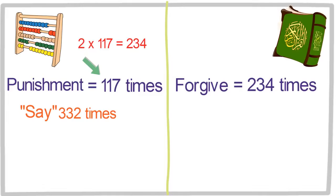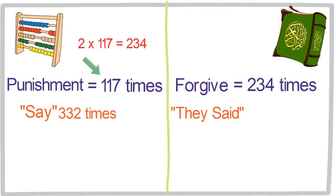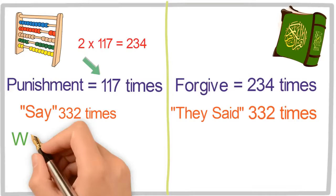Say is repeated 332 times and the response they said is again equally repeated 332 times. The words world and hereafter, they are repeated 115 times equally.